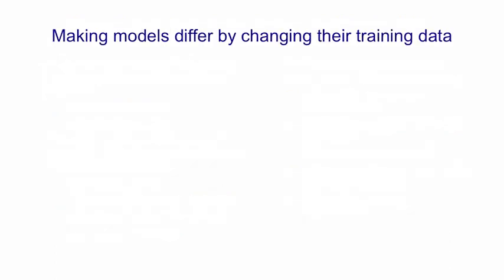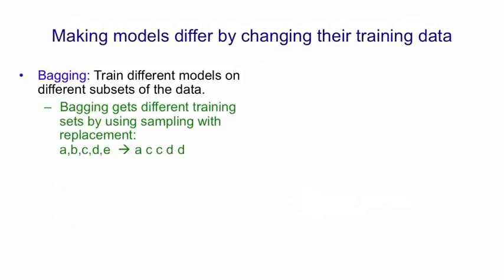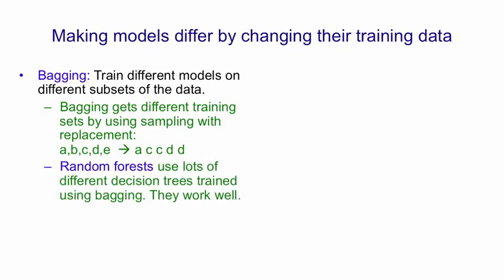You can also make the models differ by training the models on different training data. There's a method introduced by Leo Breiman called bagging where you train different models on different subsets of the data, and you get these subsets by sampling the training set with replacement. So we sampled a training set that had examples A, B, C, D, and E and we got five examples but we'll have some missing and some duplicated, and we train one of our models on that particular training set. This is done in a method called random forests that uses bagging with decision trees which Leo Breiman was also involved in inventing. And when you train decision trees with bagging and then average them together they work much better than single decision trees by themselves.